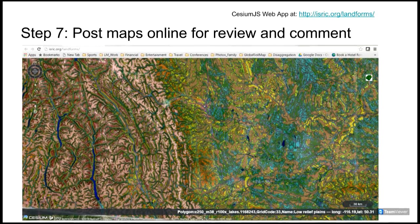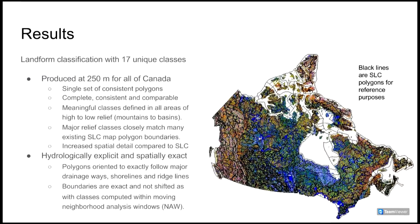Our primary result, for the moment, is production of a landform classification for Canada that has only 17 unique classes. This classification is complete, consistent, comparable everywhere, spatially detailed, interpretable, and follows major local hydrological and topographic features explicitly and exactly. In addition to the highly specific local detail, the overall general pattern of the classification agrees well with many of the existing 1:1 million scale SLC polygon boundaries.